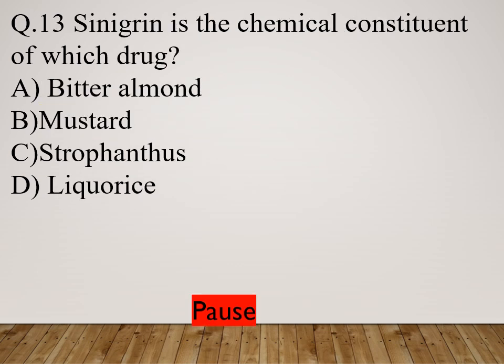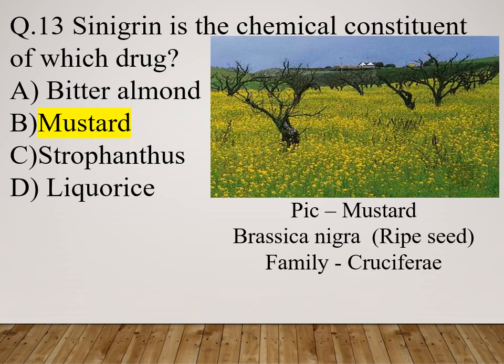Question 13: Sinigrin is the chemical constituent of which drug? Option A: Bitter almond. Option B: Mustard. Option C: Strophanthus. Option D: Lycaeas. The right answer is mustard. Brassica nigra is the scientific name of mustard; ripe seed is mainly used and the family is Cruciferae.